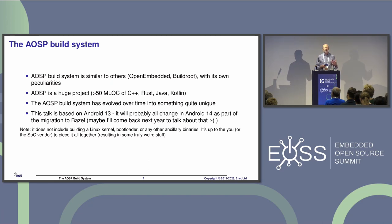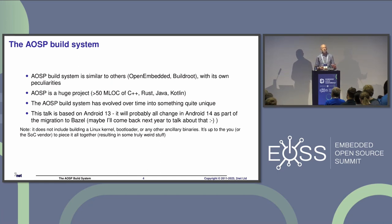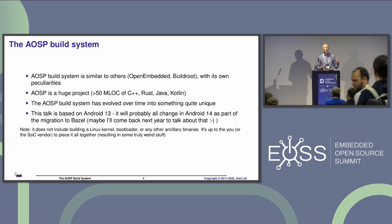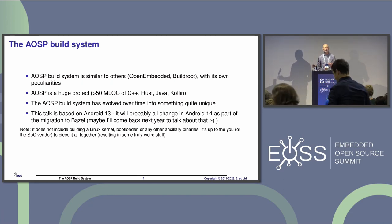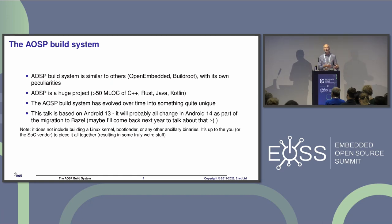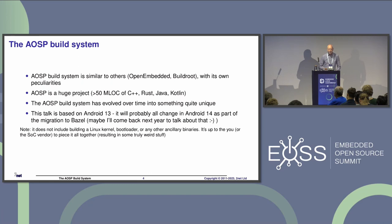The AOSP build system only builds the AOSP operating system and the upper levels. It does not build a kernel or a bootloader. Consequently, when you get AOSP from your silicon vendor, they will have bundled their own build system on top of that, which builds the kernel and bootloader — resulting in some truly weird stuff. It's not entirely ideal.